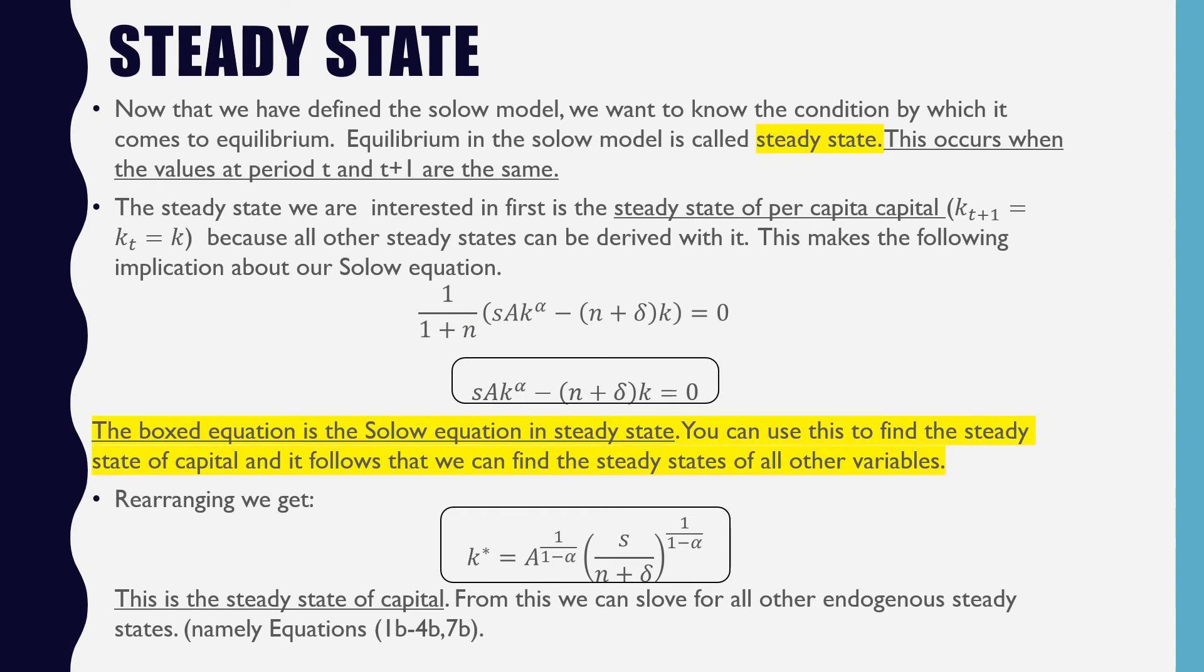Now that we've defined the Solow Model, we want to know the conditions by which it comes into equilibrium. Equilibrium in the Solow Model is called steady state. This occurs when the values at period T and T plus 1 are the same.